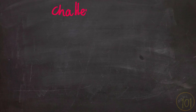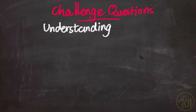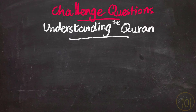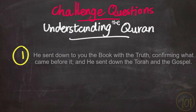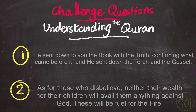Now it's time for the challenge questions of this session, taken from Surah Al-Imran. First question: 'He sent down to you the book with truth, confirming what came before it, and he sent down the Torah and the Gospel.' Second question: 'As for those who disbelieve, neither their wealth nor their children will avail them anything against God. These will be fuel for the fire.' Were you able to find the correct verses? Let me know in the comments below.